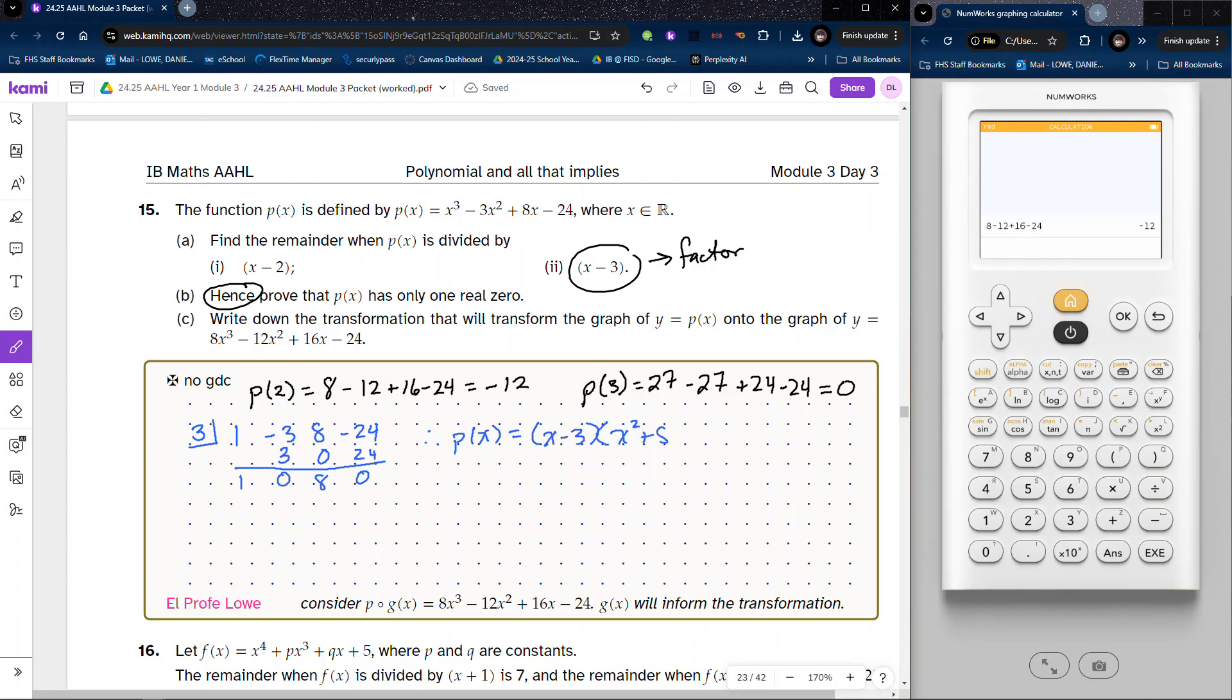times x squared plus 8. And we know that x squared plus 8 is equal to 0 if x is equal to plus or minus i square root of 8, because we're working with the complex solutions here. And so therefore the only real root is going to be x equals 3.